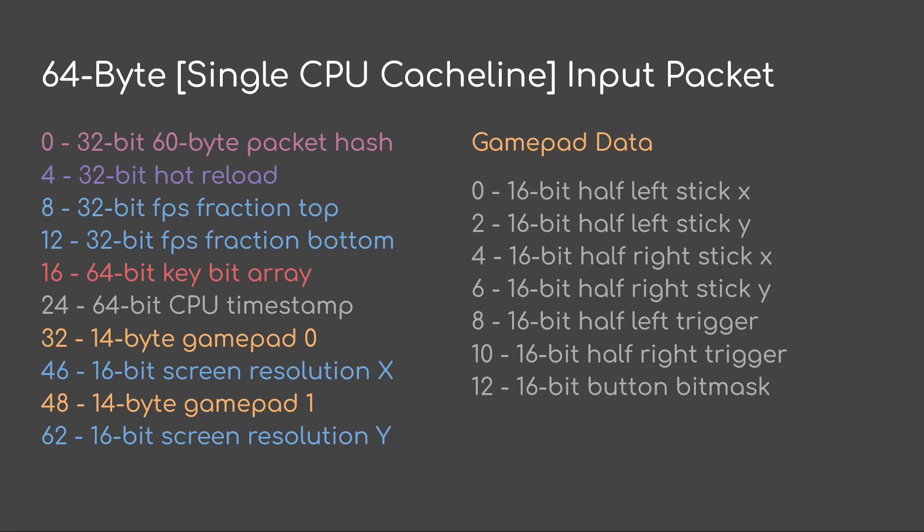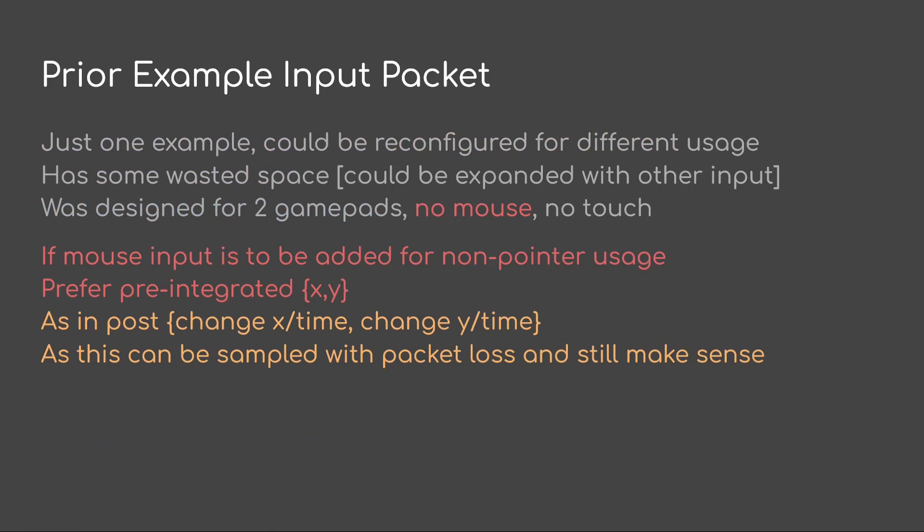If you look in the gamepad data, mostly everything is FP16, and towards the bottom I have a 16-bit integer — a button bitmask for all the things that are not high precision. This prior example is just one configuration I like to use. You could reconfigure it for different usage; you could use two cache lines for instance. It has some wasted space and could be expanded with other input like mouse.